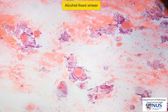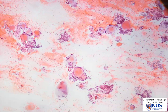On the alcohol-fixed Papanicolaou stain smears, again, we can see these very large stromal balls. They can be a little bit difficult to appreciate sometimes. Many of them are actually almost colorless — they are pale bluish or grayish.